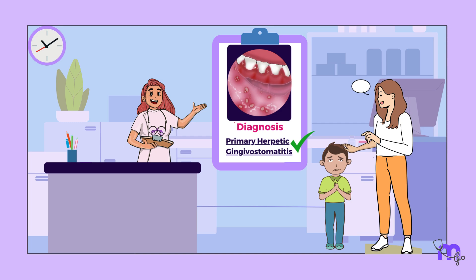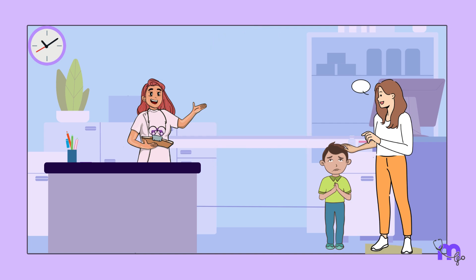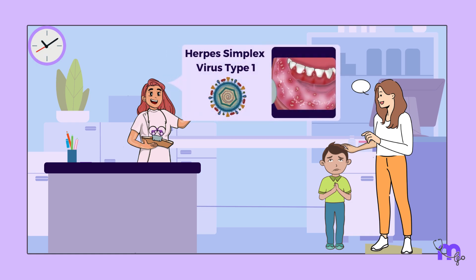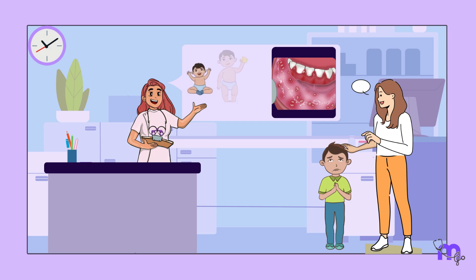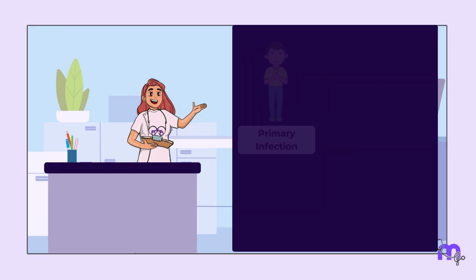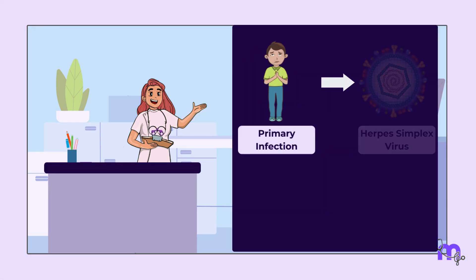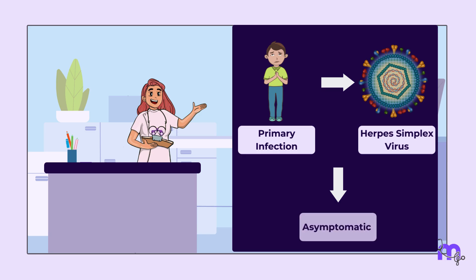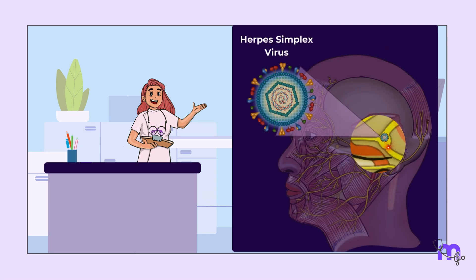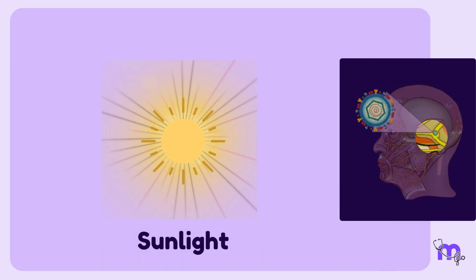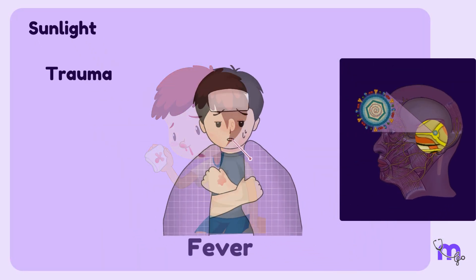As I established the diagnosis, I spoke to Ajo's parents about primary herpetic gingivostomatitis. It is a viral infection of the oral cavity caused by herpes simplex virus type 1, most commonly seen in infants and children younger than 6 years. Most often, primary infection with herpes simplex virus is asymptomatic and the virus may remain latent or hidden in the neuronal ganglia. Sunlight, trauma, fever,